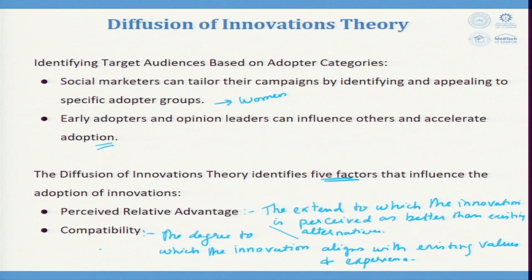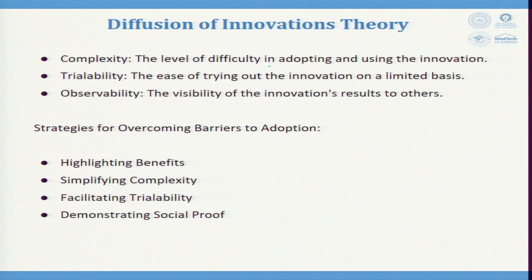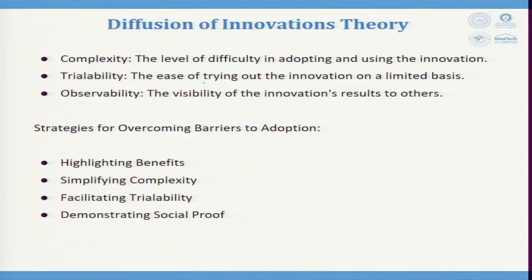Complexity refers to the level of difficulty in adopting and using an innovation. For example, if you put an automatic shaving machine in front of a person, by looking at the machine he should be able to understand how to use it. Trialability is the ease of trying out the innovation on a limited basis. Observability is the visibility of the innovation's results to others.